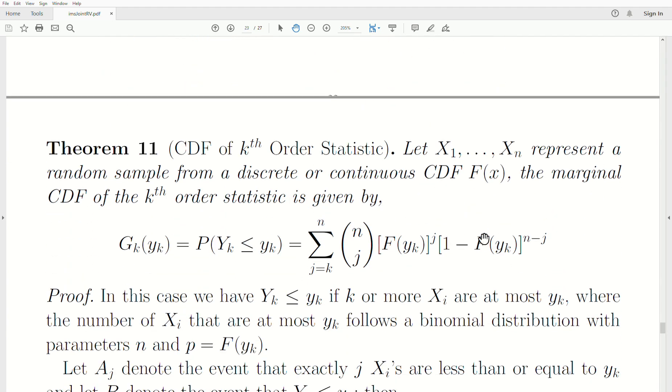Now let's look at calculating the CDF of the kth order statistic. When you look at the CDF of the kth order statistic, the Xi can represent a random sample from discrete or continuous CDF. In part one, and prior to this video, the data had to be continuous. But here, calculating the CDF, it can be discrete. The marginal CDF of the kth order statistic is this equation here.